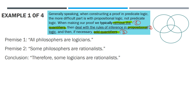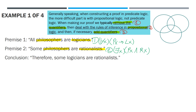Example one, premise one: we're told that all philosophers are logicians. We have universal quantification here — for all x, if x is a philosopher, then x is a logician. Premise two: some philosophers are rationalists. This has existential quantification — there exists some x where x is a philosopher and x is a rationalist. Therefore, some logicians are rationalists: there exists some x where x is a logician and x is a rationalist. Intuitively, this argument makes sense, and we can picture this through a Venn diagram.